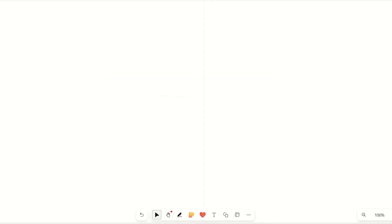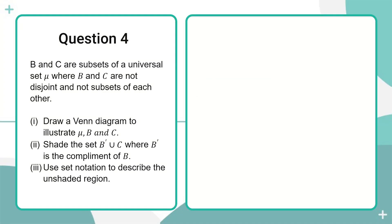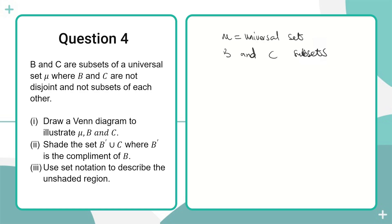Now let's look at how we can solve this question. We are given mu as the universal set, and we are also given B and C as our subsets. Remember that there are some conditions given in the question that we use to draw the Venn diagram. One of those conditions is that they are not disjoint.